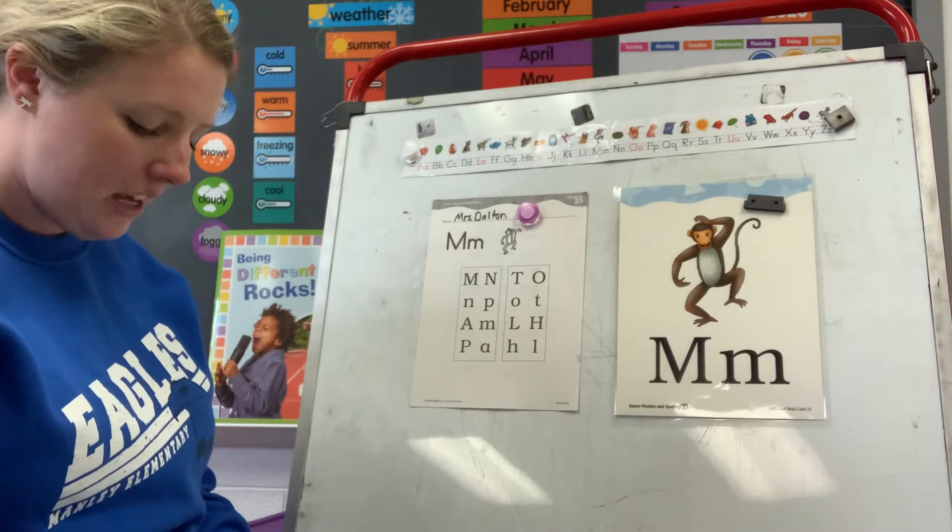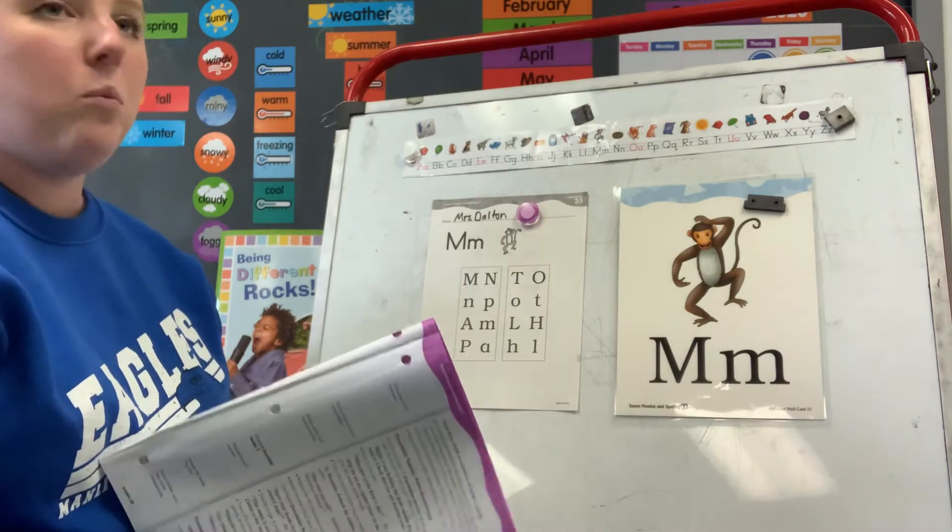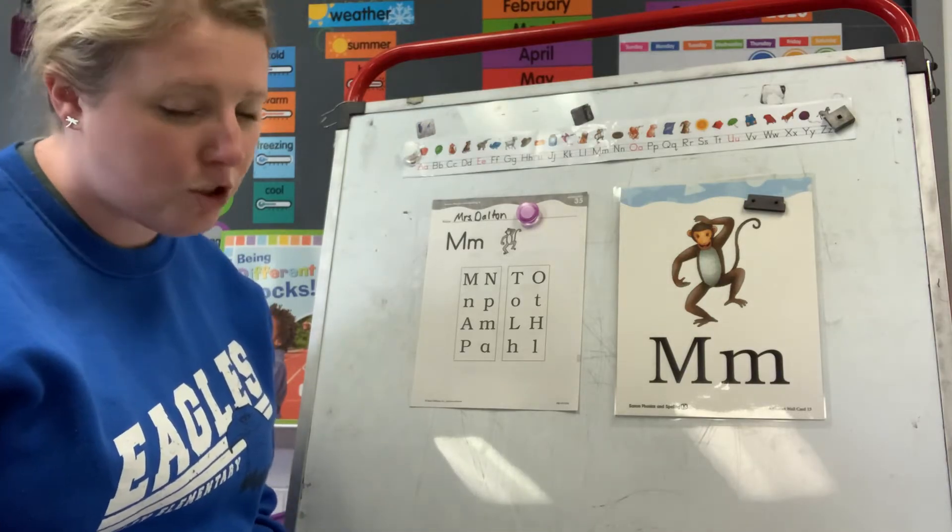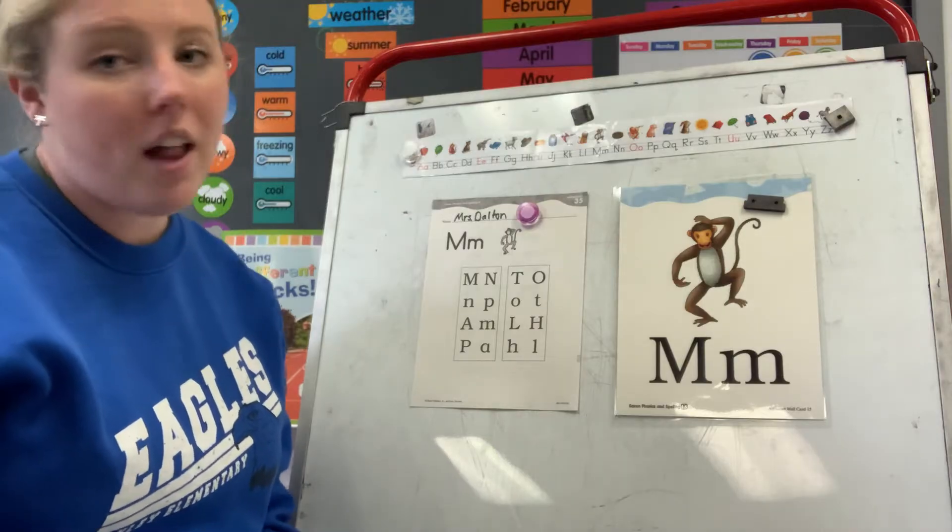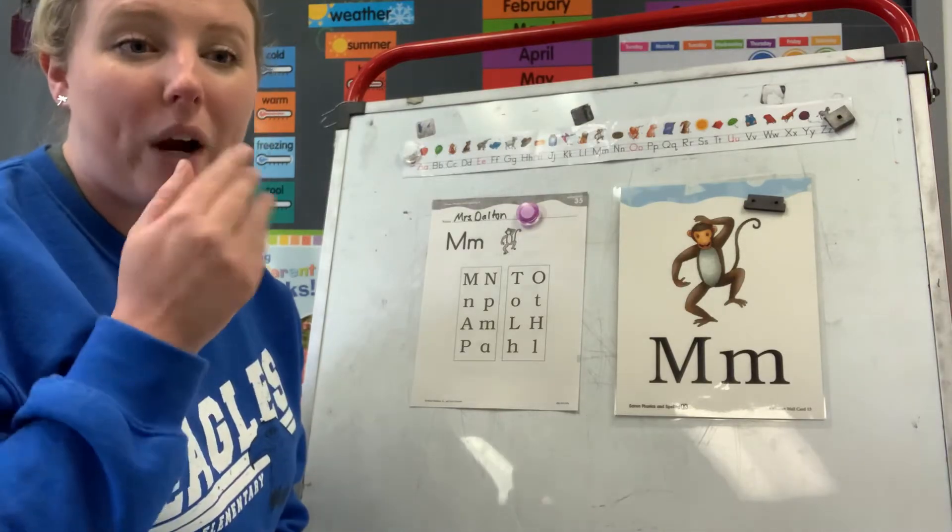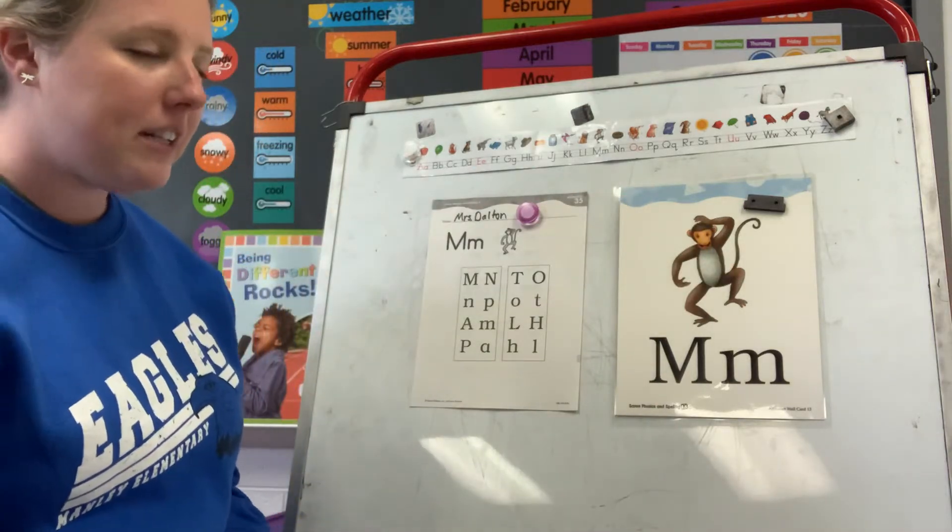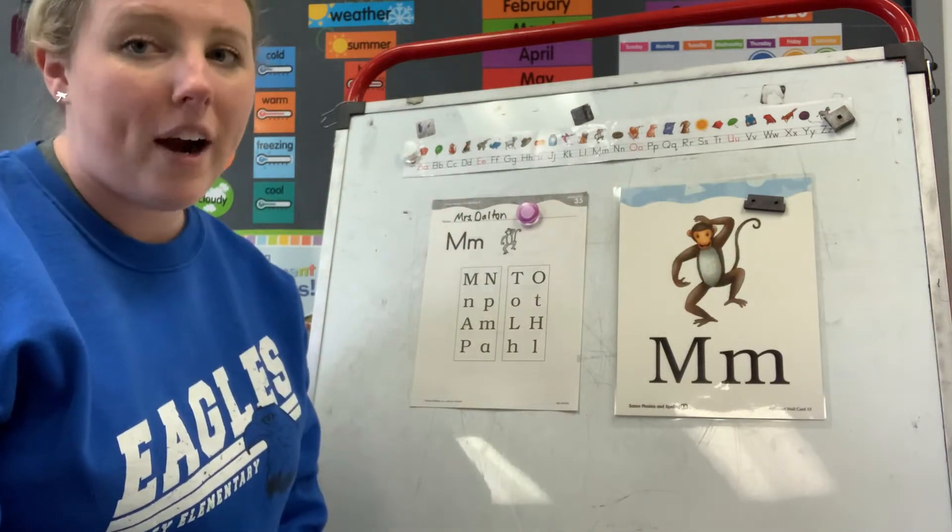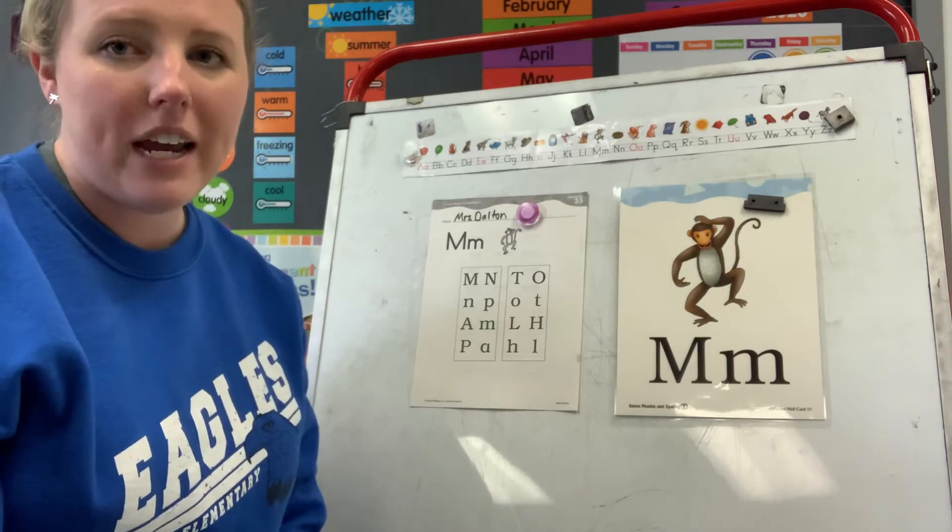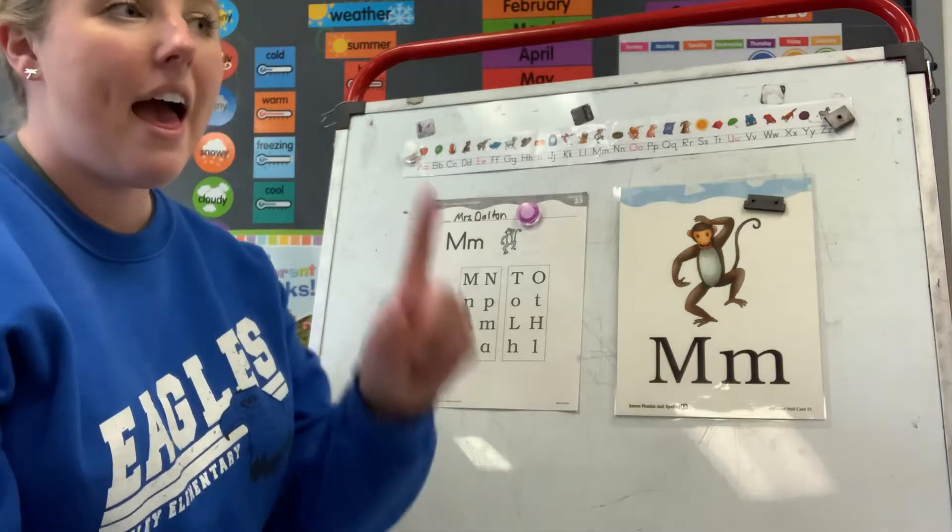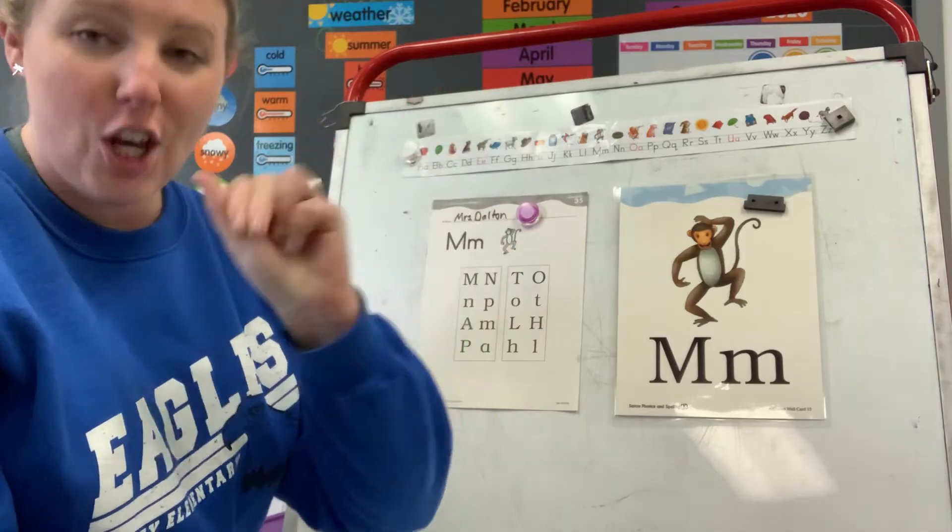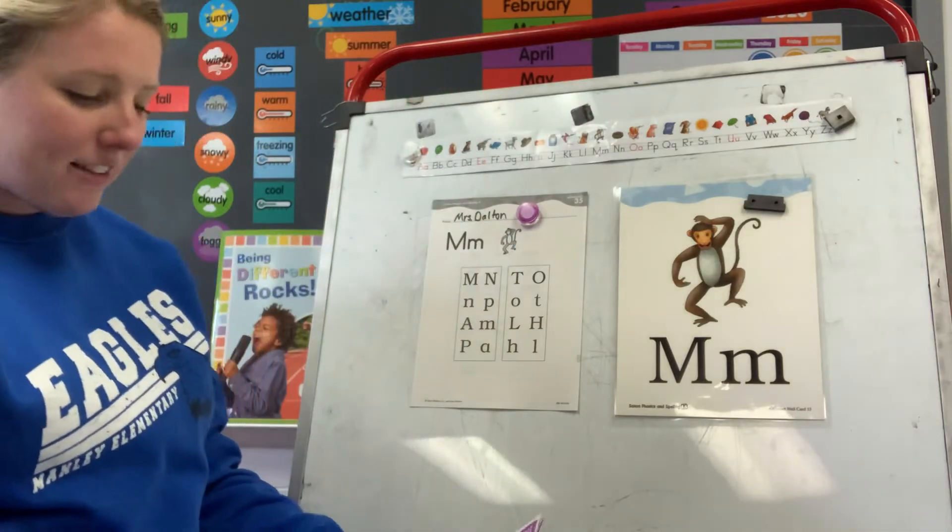Now, let's take a look at our worksheet today. Before we do that, we're going to listen to some words, and you are gonna count how many sounds you hear in the words. So we're not looking for syllables today. We're not clapping out syllables. We're looking for each individual sound. So let me give you an example. If I said the word at, can you say at? How many sounds are in that word? Let's break it apart. A, T, how many sounds are there? Two, there are two sounds in at, okay?